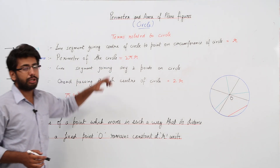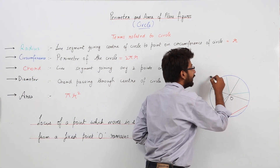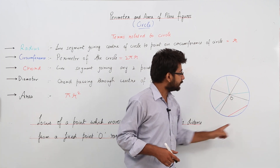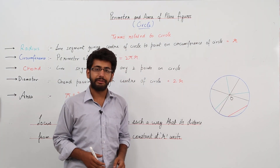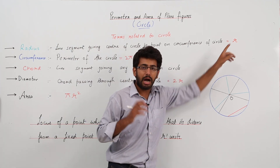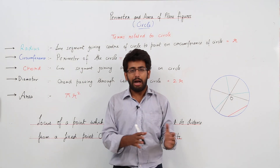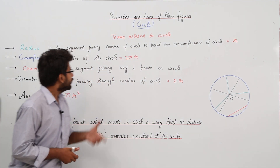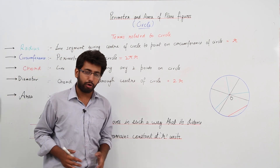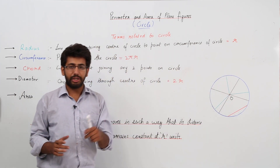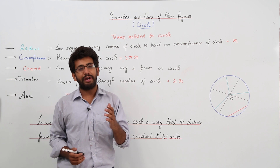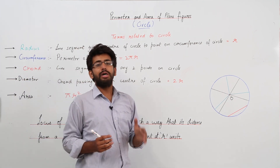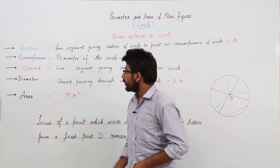The circumference is the perimeter of the circle — the blue colored part is known as the circumference. Any line segment joining the center and the circumference is known as the radius, denoted by R, and its units are units of length. The formula to find the circumference of the circle is 2πR, that is, two into pi into the radius.